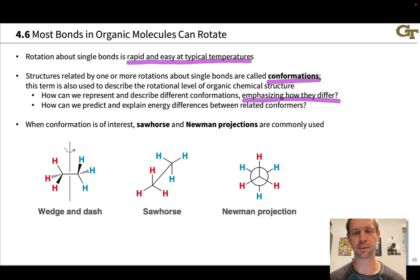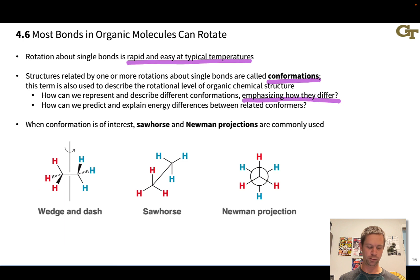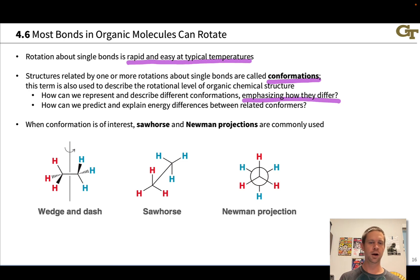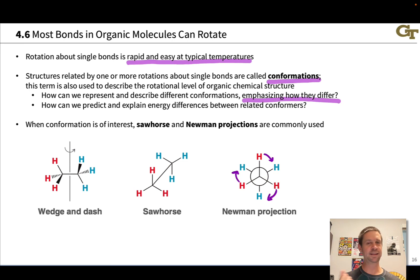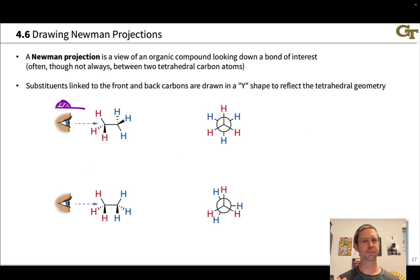This particular Newman projection comes from assuming a viewpoint from this side of the molecule. The point is that these representations emphasize rotations around that central bond. If I rotate the front carbon with respect to the back carbon, all of these hydrogens are going to move pretty dramatically, and we can see that very easily using a Newman projection.